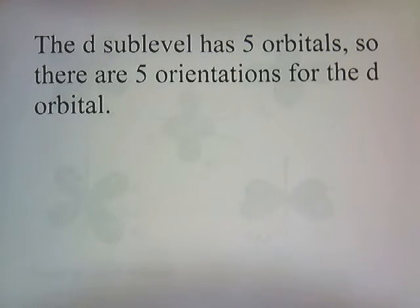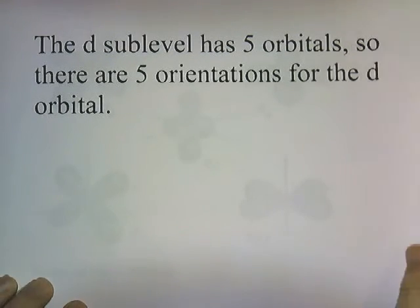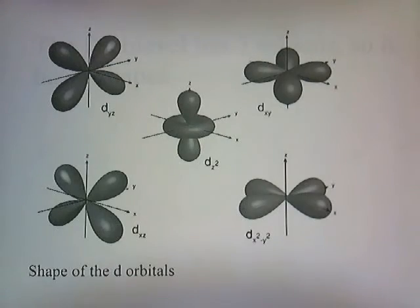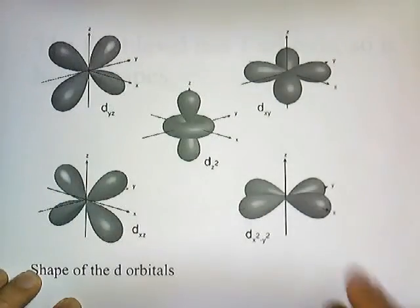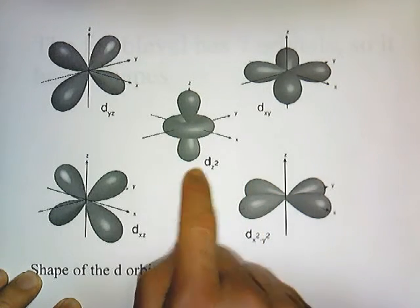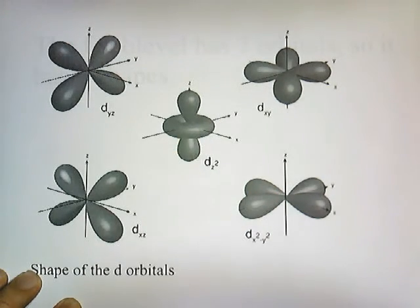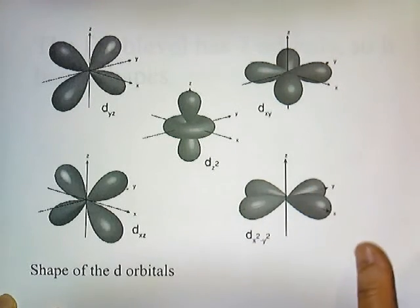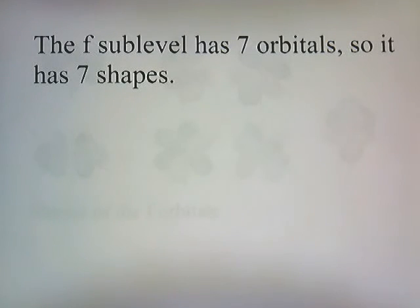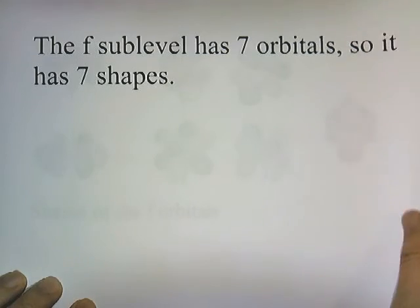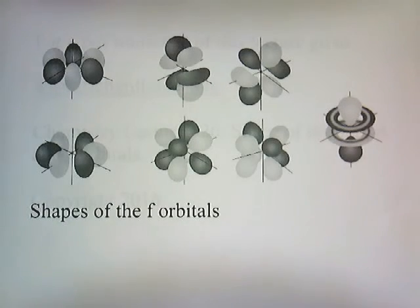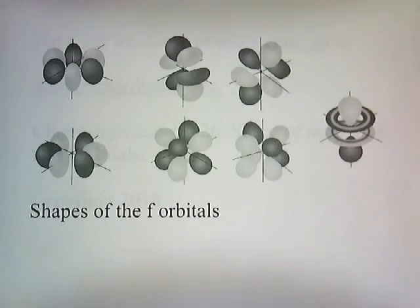The D sublevel has five orbitals, so there are five orientations for the D orbital. These are the shapes of the D orbitals — they all have the same shape, except for the last one, which looks like a P orbital with a donut around it. Five orbitals, so five orientations or shapes. The F sublevel has seven orbitals, so it has seven shapes and orientations. It's a really unusual one — it's got that dumbbell shape with two donuts around it.